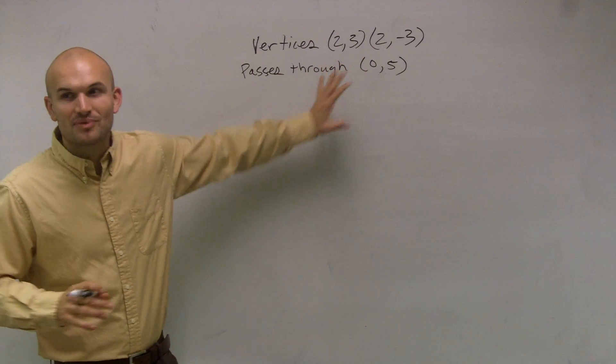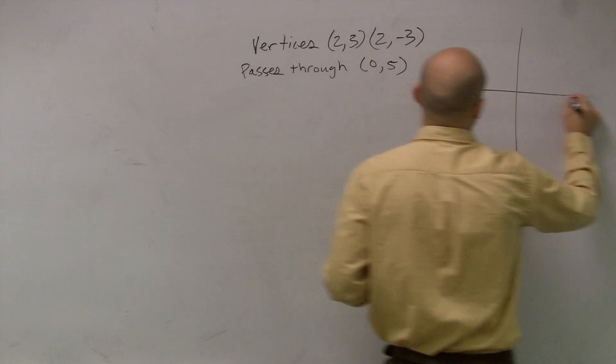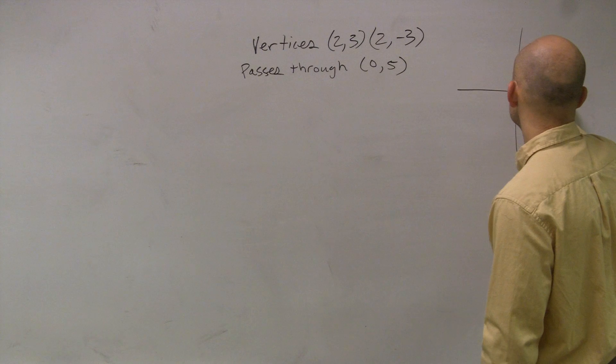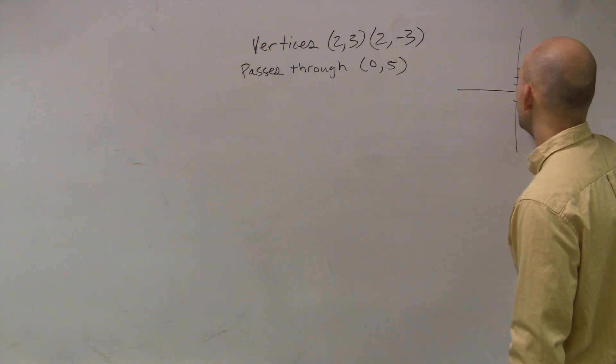The first thing you want to do is let's just plot the points to see if we can figure out what form we're going to want to use. So I go over 2, 1, 2, up 1, 2, 3. Then I go over 2, down 3.